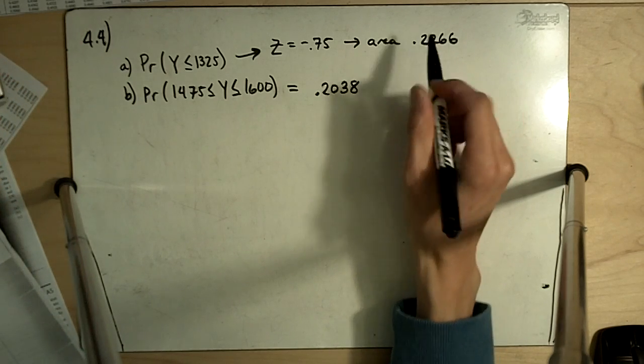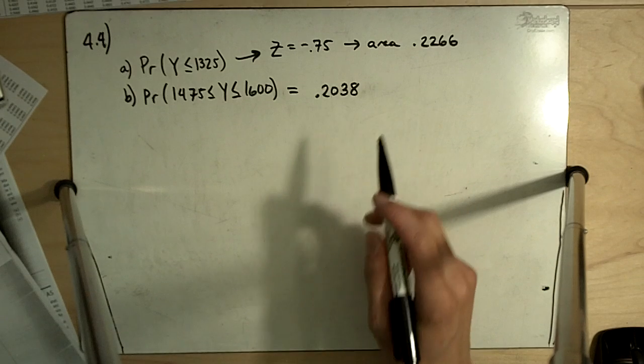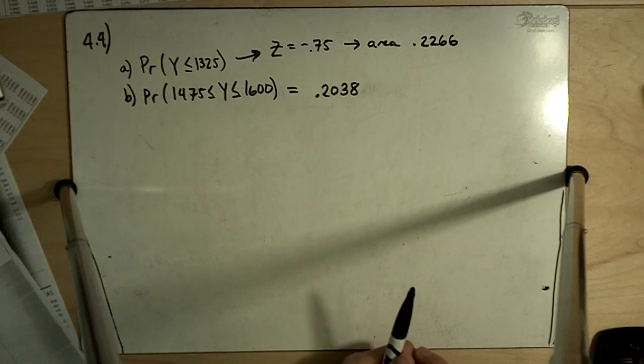So that is the probability that a randomly selected brain is less than 1325 grams.